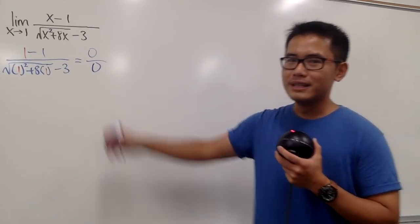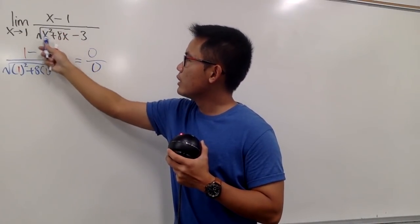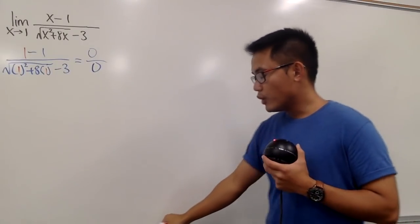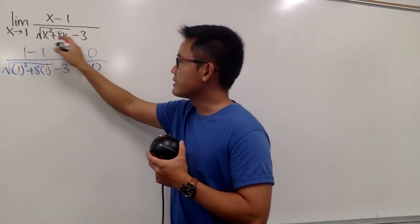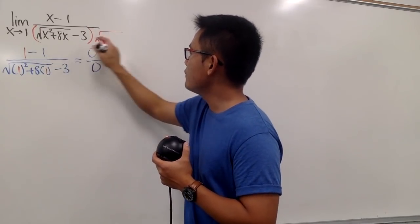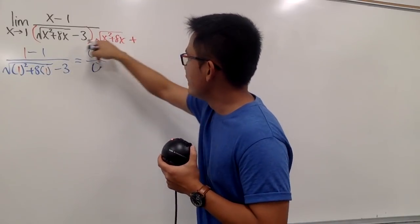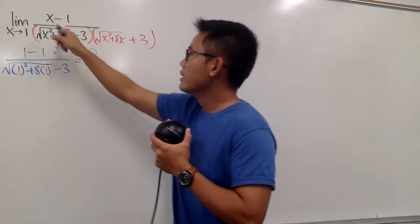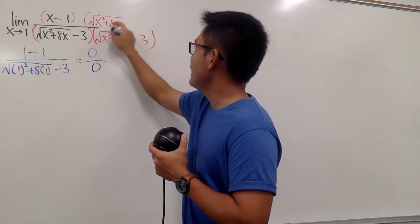Here's something new: we have a square root term in the denominator — the square root of x squared plus 8x, minus 3. Whenever we have a square root term in a limit question, we multiply the top and bottom by the conjugate. The conjugate of the denominator is the square root of x squared plus 8x plus 3.